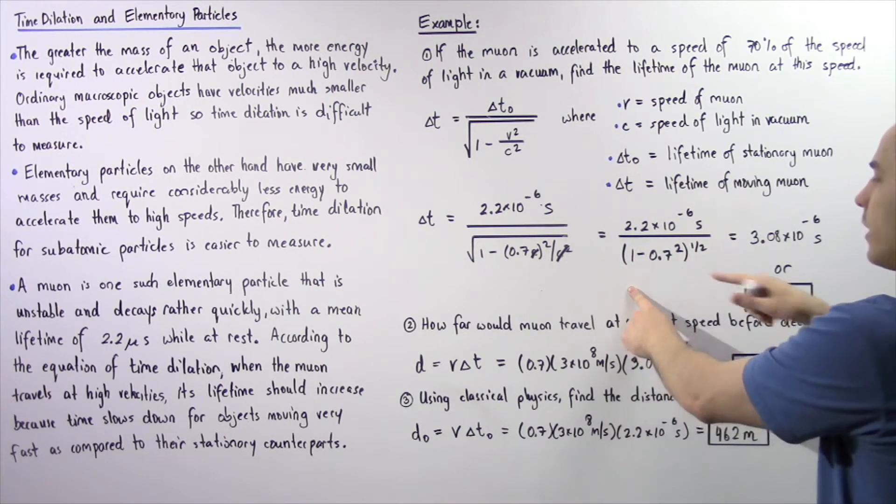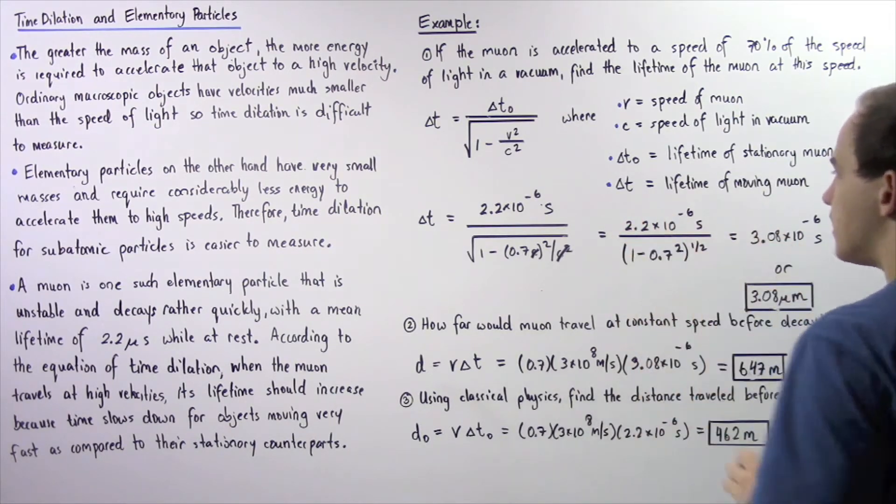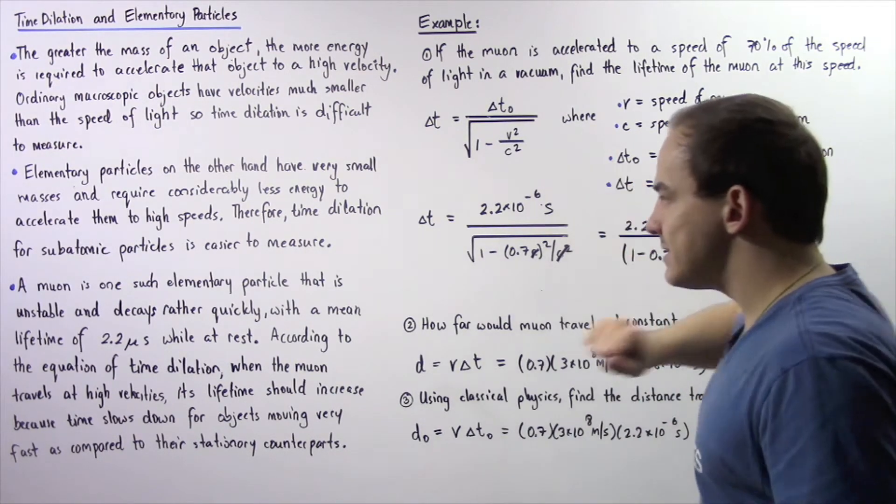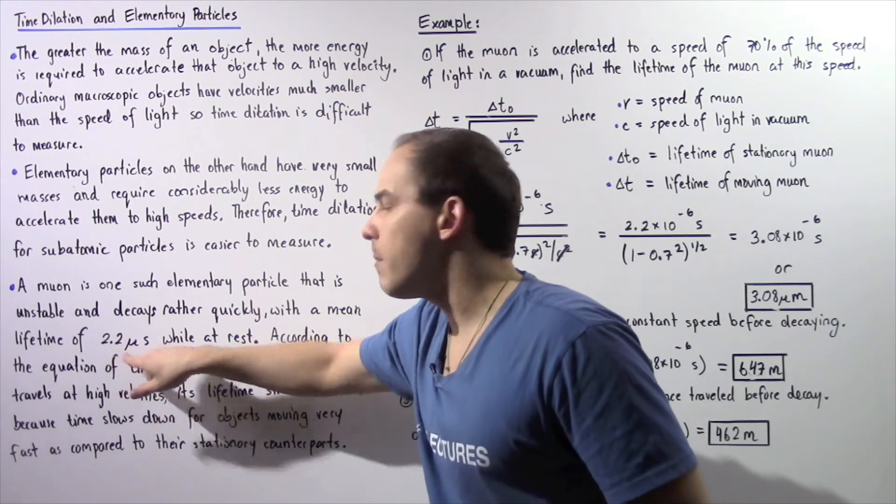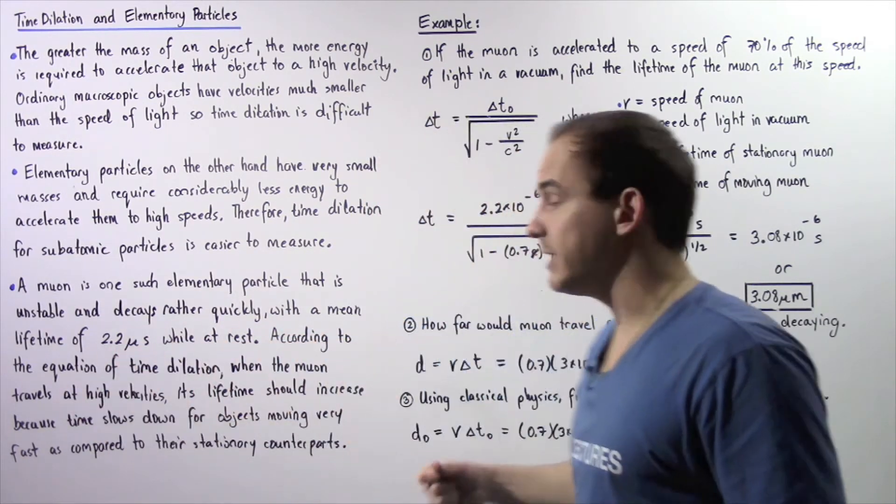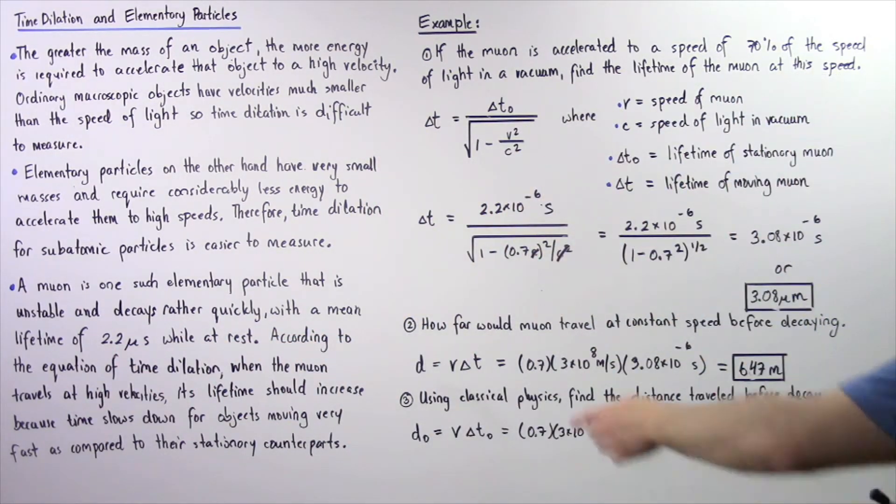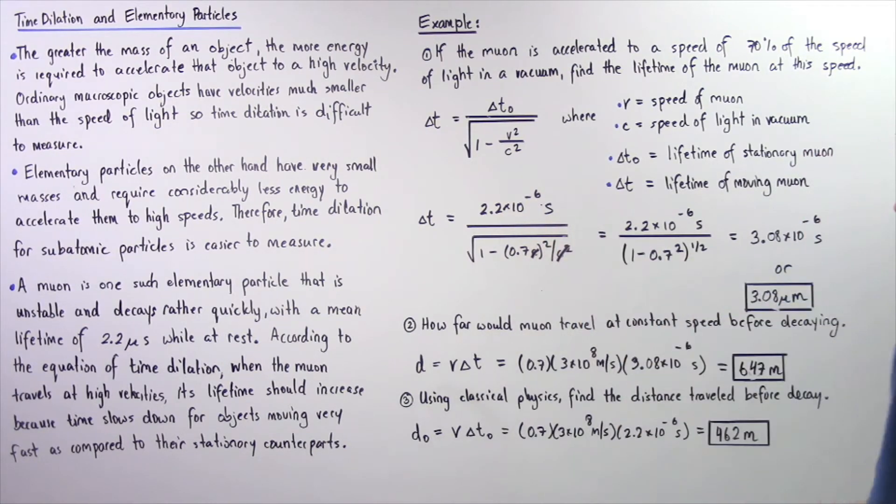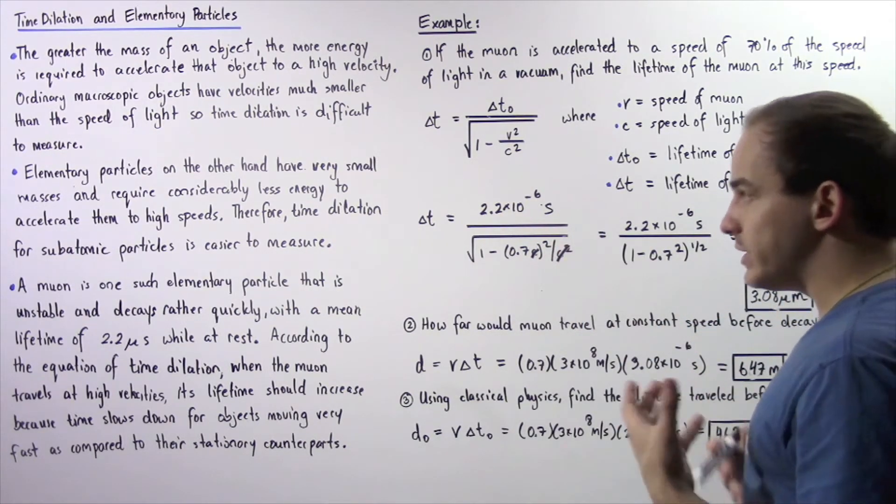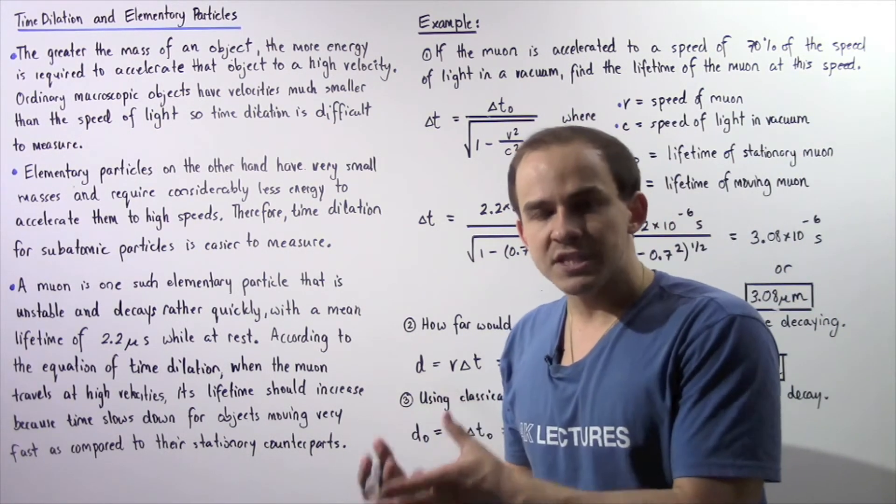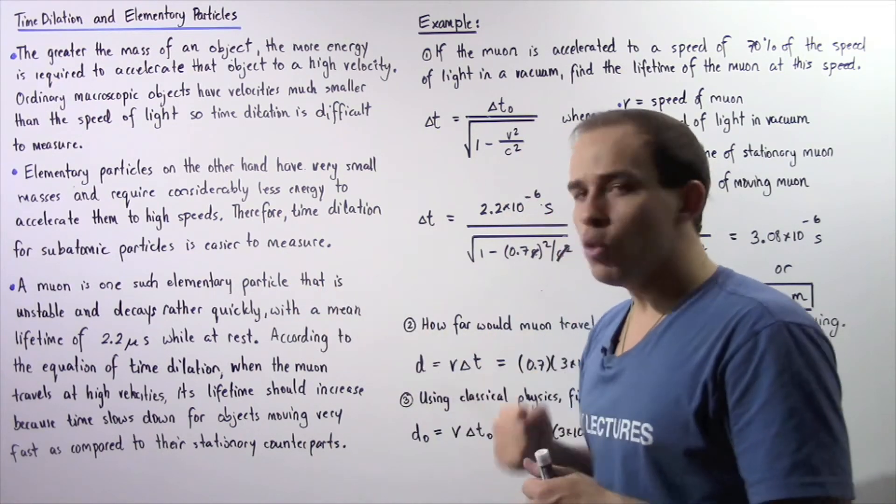So we square root 0.51 and that becomes the bottom. Now the top is equal to 2.2 microseconds or equivalently 2.2 times 10 to the negative 6 seconds.